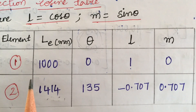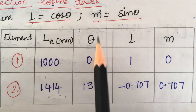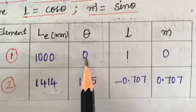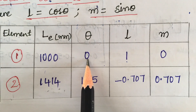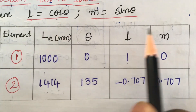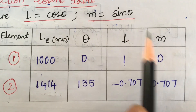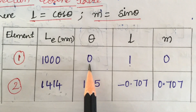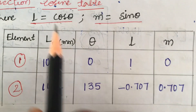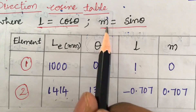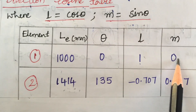In the earlier part 1 video, I have covered up to theta 1. For theta equal to 0, where l equals cos theta and m equals sin theta. So for a value theta equal to 0, cos theta is 1 and sin theta is 0.